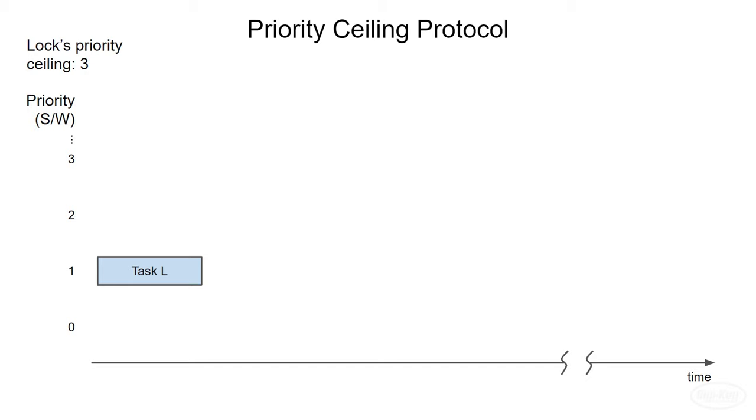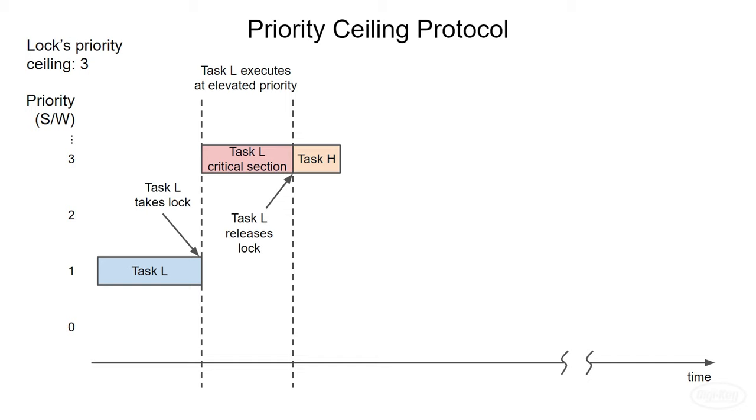Now, when task L takes the lock, its priority is automatically boosted to that of the resource's priority ceiling. This, of course, assumes your RTOS is capable of dynamically assigning priority levels to tasks once they've been created. Task H may try to take the lock, but it will be blocked until task L is finished with it. Once task L does release the lock, task H may take it and enter the critical section.